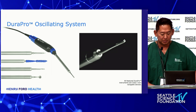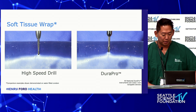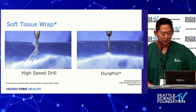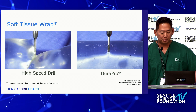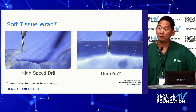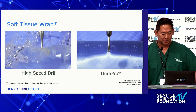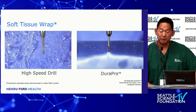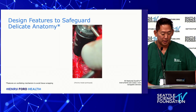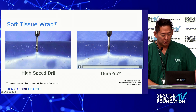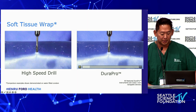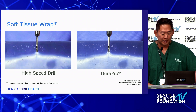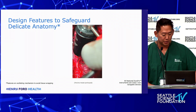With the Durapro oscillating system, instead of rotating like a traditional burr, it actually oscillates. This video demonstrates the differences. With a high-speed traditional burr, you have 360-degree rotation, so if you get any soft tissue it can get wrapped up — you can imagine the thecal sac or a nerve root getting caught, causing a large laceration and nerve injury. But on the right, you can see the Durapro. Here it's being used on a water-filled condom and you can see it's on it without catching anything. This is an added bit of insurance for when you're doing these surgeries.